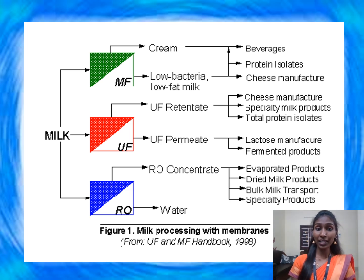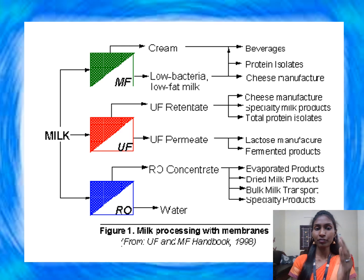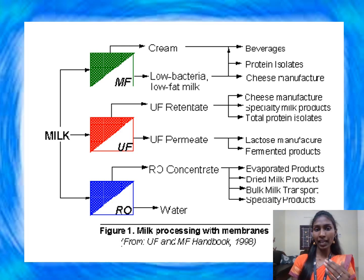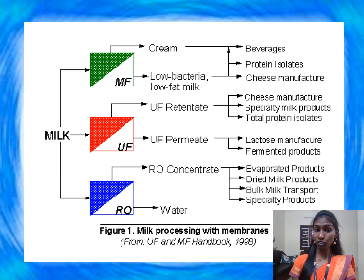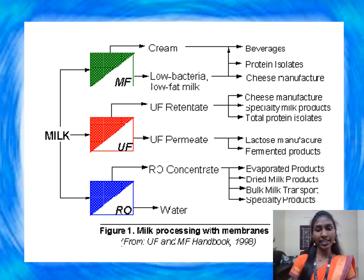These are the applications of membrane processing in the dairy industry. When fluid milk is passed through microfiltration (MF), you can get cream as well as low-fat milk. The cream is used for further product preparation and the low-fat milk is also used for dairy product manufacturing. Similarly, ultrafiltration and nanofiltration have found applications in the dairy industries.